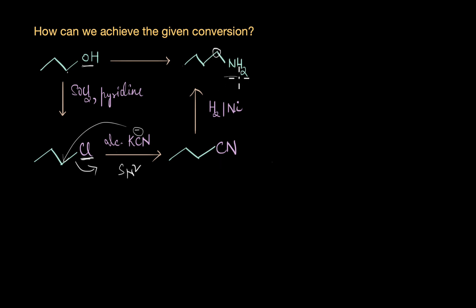Now we can perform a reduction reaction or treat this alkyl cyanide with hydrogen in the presence of nickel or palladium to convert it to CH2NH2 group here. This is a simple straightforward reaction. Now if I want to extend this reaction a little further, let's say convert our amine to the corresponding alcohol, butylamine to butanol, is there a way by which we can achieve this conversion?